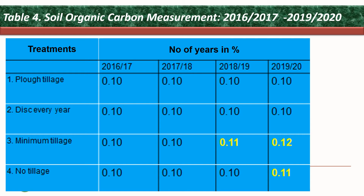Table 4 represents soil organic carbon measurements from 2016 up to 2019–2020. The standard number was the initial figure recorded at the inception of the research trial. Differences were first observed in 2018–2019, where minimum tillage showed an increase of 0.10%, which increased further in 2019–2020 from 0.11% to 0.12%. Under no-tillage, the first slight increase in soil organic carbon was realized in 2019–2020, increasing from 0.10% to 0.11%.